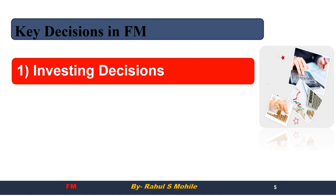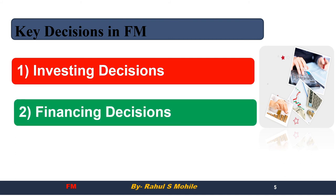Under investment decisions, we will do capital budgeting — that means deciding where to invest whatever funds we have. If you are making long-term investments, that is called capital budgeting. If you are making short-term investments, there is a chapter called working capital management. We cannot invest randomly; there are many provisions and points to keep in mind, which will be explained in much more detail when we cover capital budgeting.